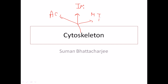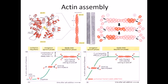Microtubules help the cell to segregate chromosomes during cell division. Chromosome segregation during cell division is really very important because mis-division or misaligned chromosome division can produce abnormalities in the cell. Now let's move on — we will discuss the actin filament first, then intermediate filament, then microtubules.